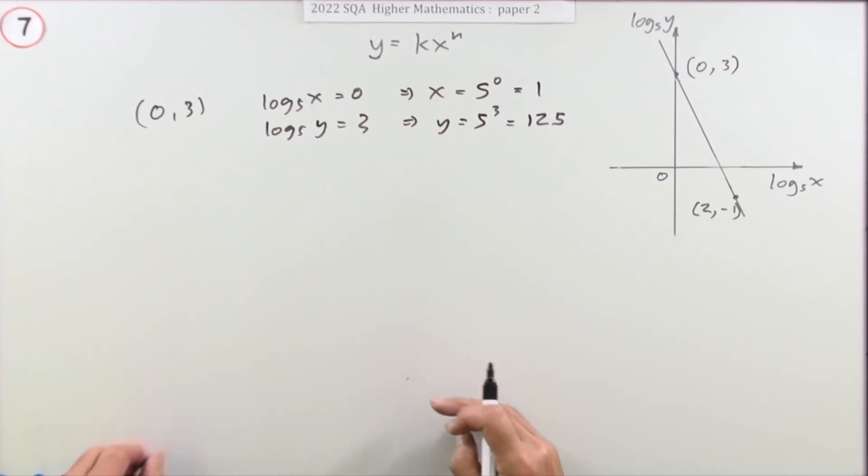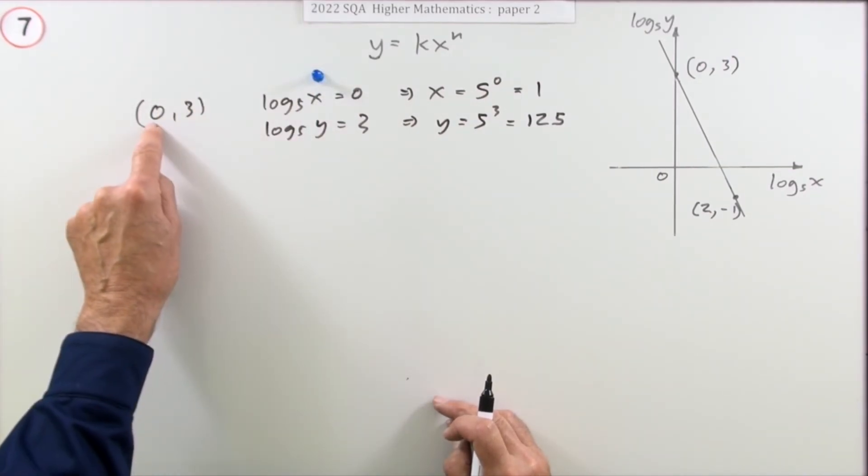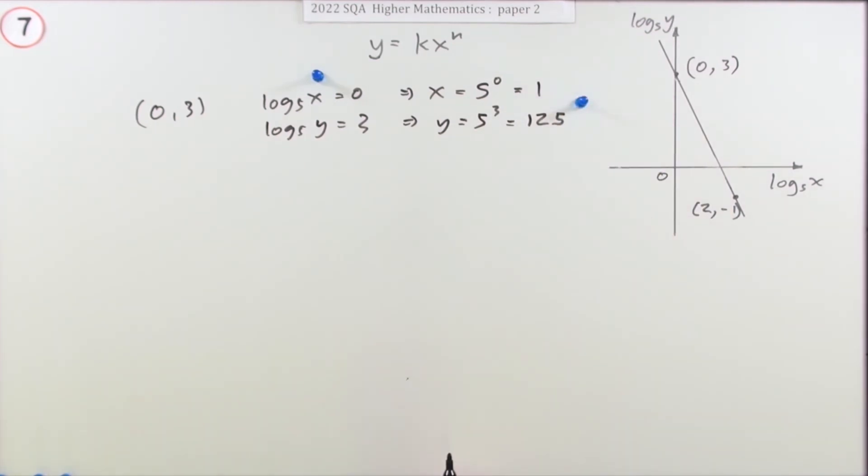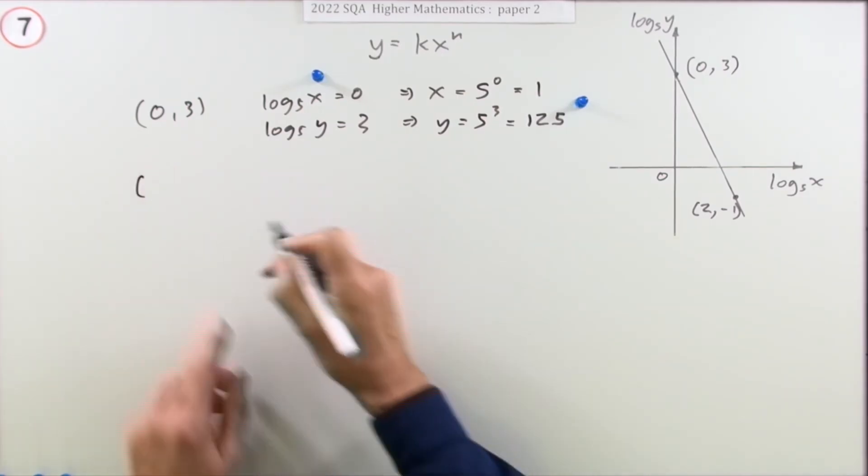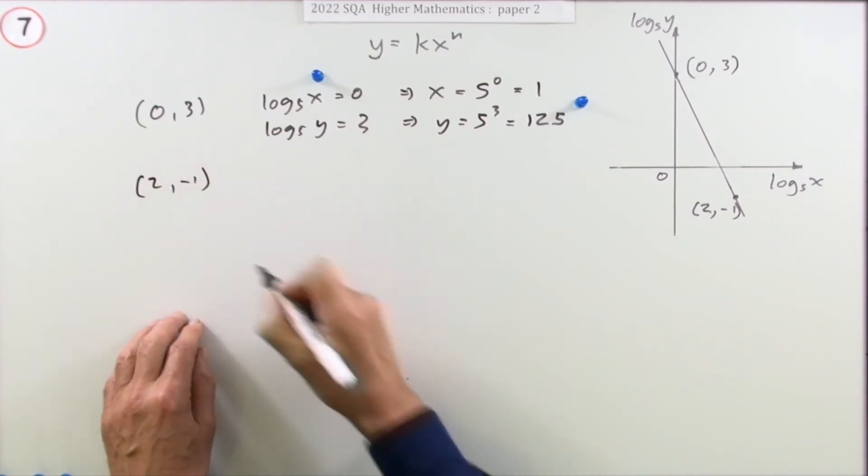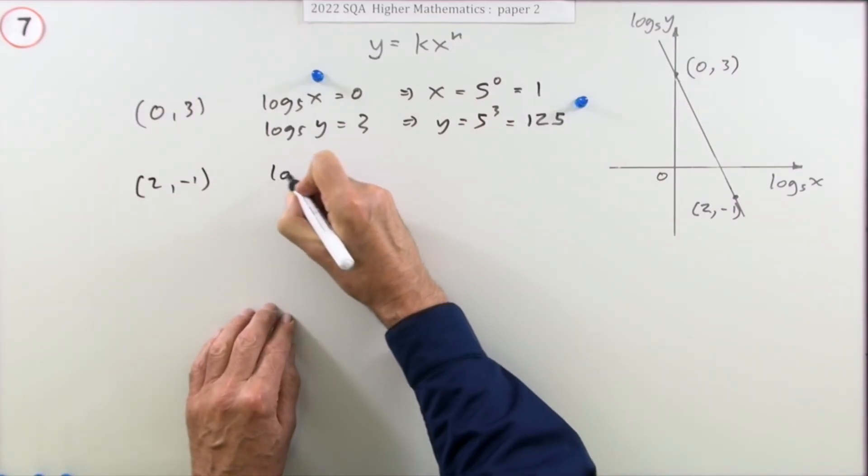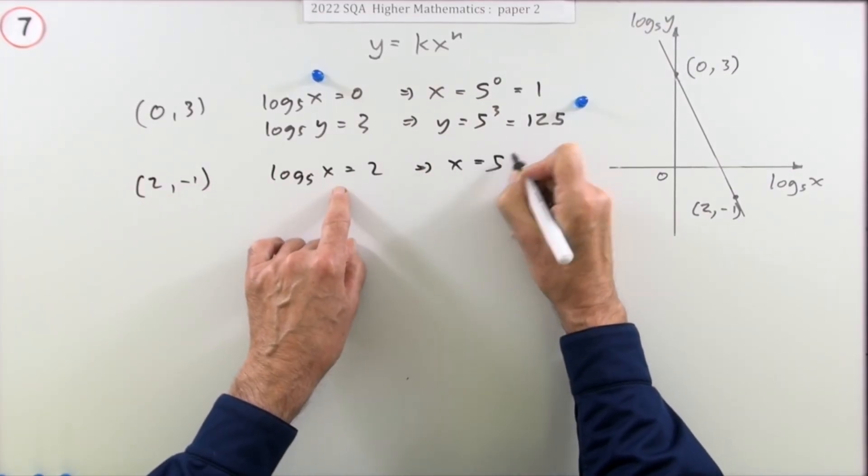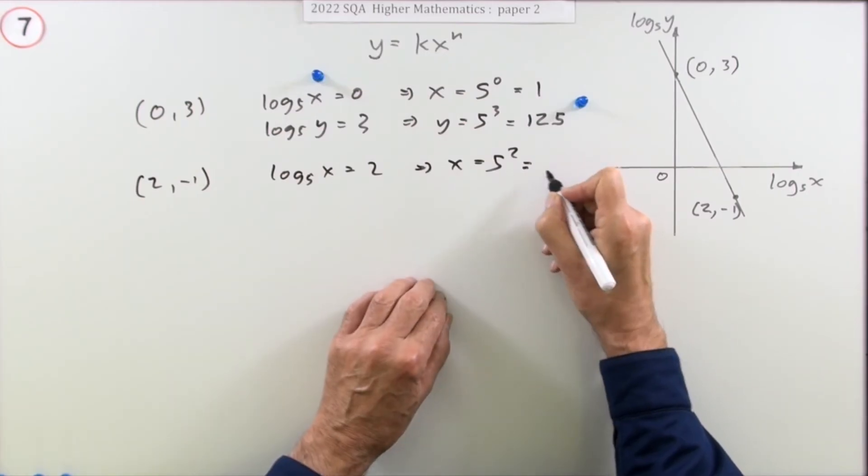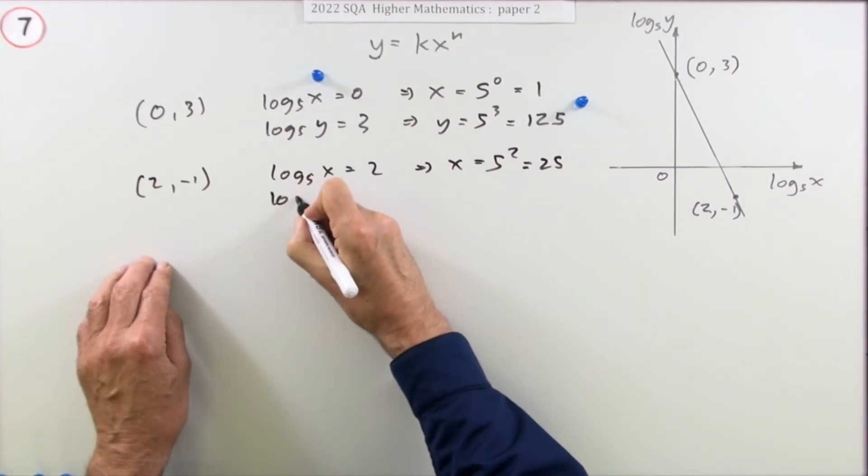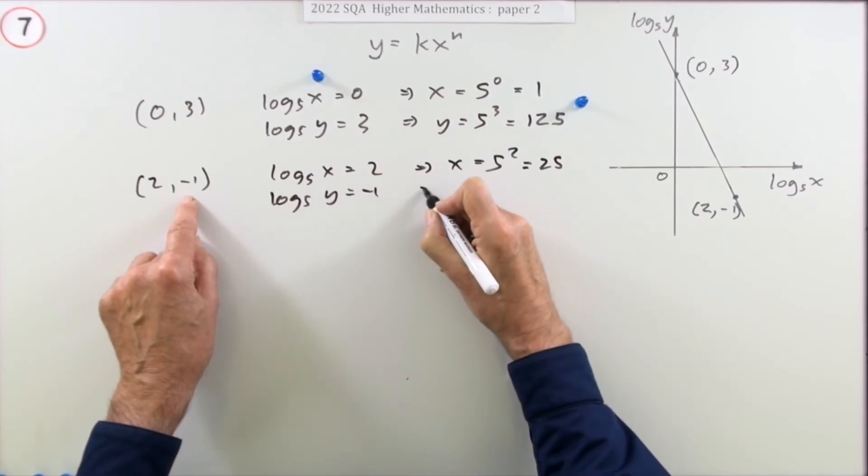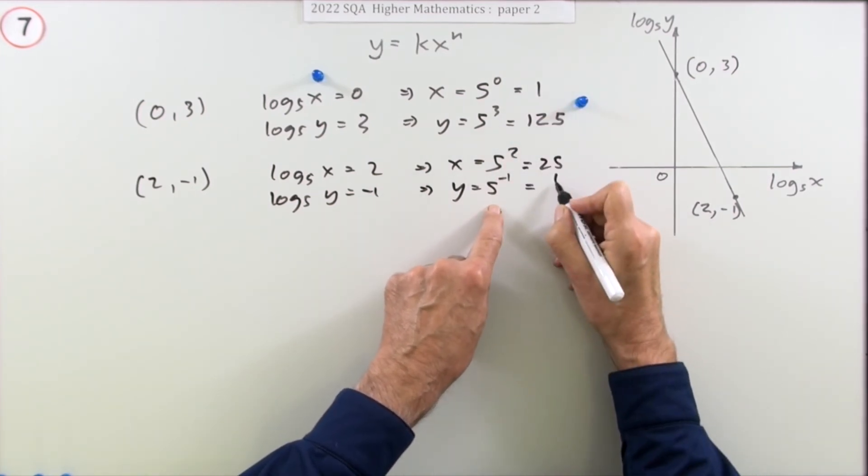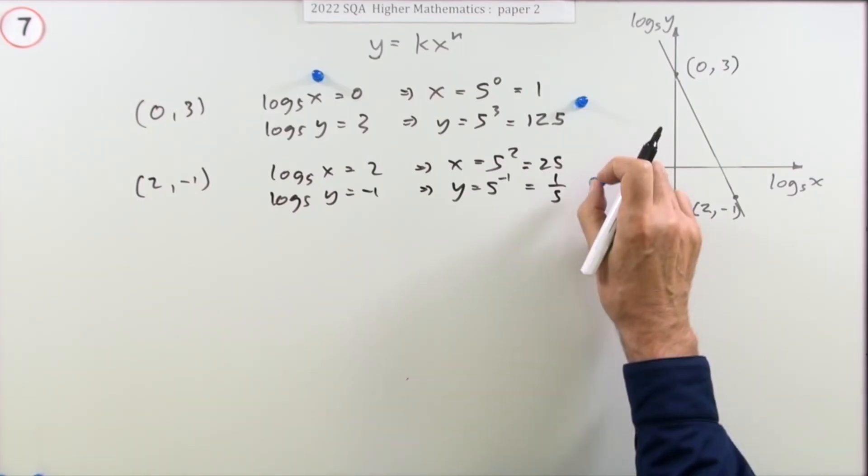Now doing it this way, there's two marks already. One for knowing how to get back to the original values, because these were actually the logarithms, and one for getting those two values. So that was one point. You'd be doing the same thing with the other point, with (2, -1), so you only got one mark this time because you're doing the same thing again. You'll just be saying that log 5 of x was 2, which means x will be 5 to the power 2. Notice you could leave them all as powers of 5, but I'll just take it to 25. And log base 5 of y was -1, which means y is going to be 5 to the power -1. Might have been better just leaving it as powers of 5, because that's now 1 over 5.